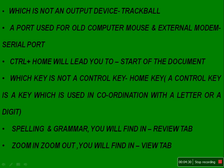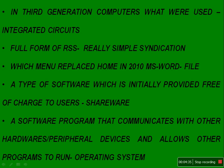Two easy questions: Spelling and Grammar is found in the Review tab, and Zoom in/Zoom out is found in the View tab. For third-generation computers, the question asked what was used — options included vacuum tubes, transistors, integrated circuits, and VLSI.